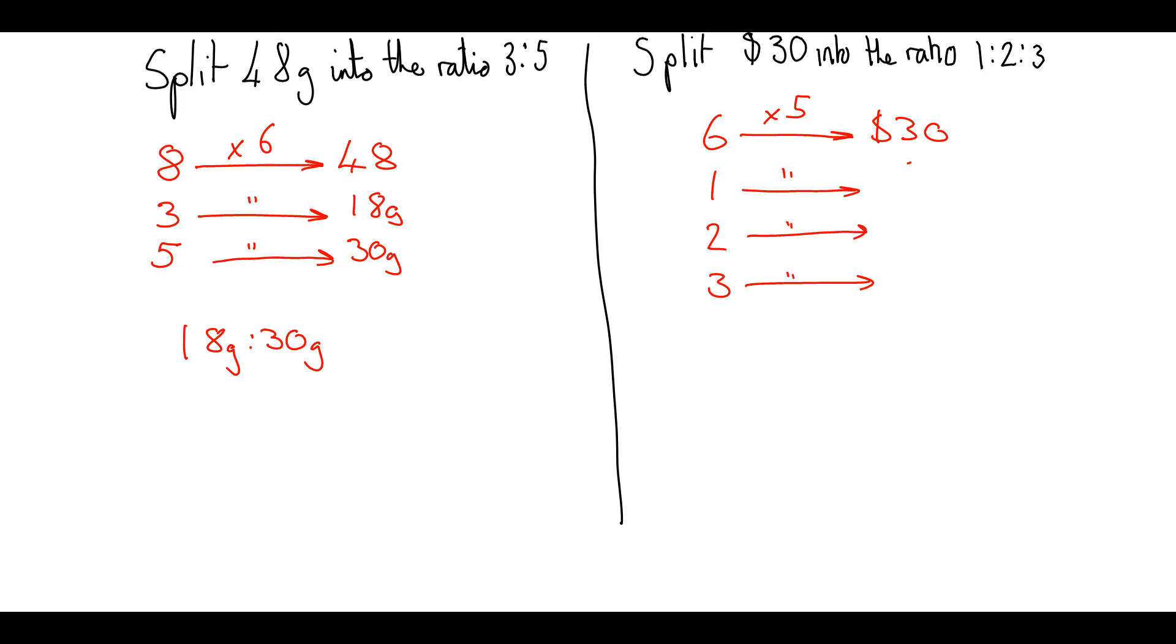1 multiplied by 5 is 5, 2 multiplied by 5 is 10, 3 multiplied by 5 is 15. So the solution to our problem here is going to be $5 to $10 to $15. I hope that was helpful.